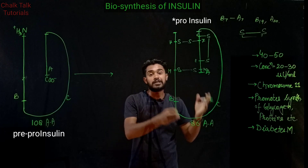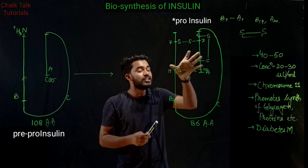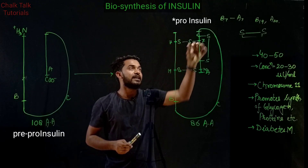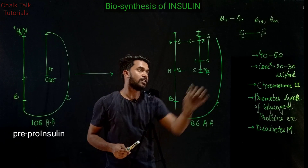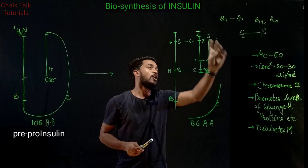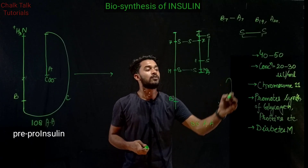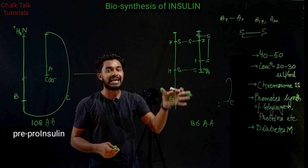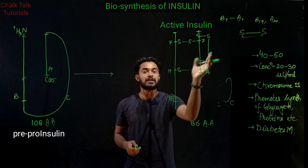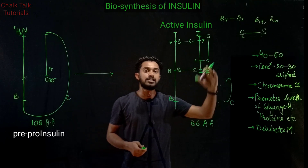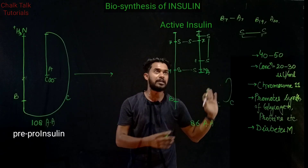To convert pro-insulin into active insulin, the C chain must be removed. The A chain and B chain are connected and will remain, while the C chain is detached. Once the C chain is separated, we are left with the active structure consisting of only the A chain and B chain — this is the active insulin. The C chain plays no role in active insulin.